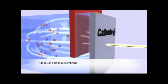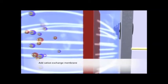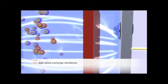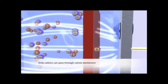When we insert an ion exchange membrane made of cation-selective resins, it will block the flow of anions and water molecules. Only cations will be able to pass through to the other side.